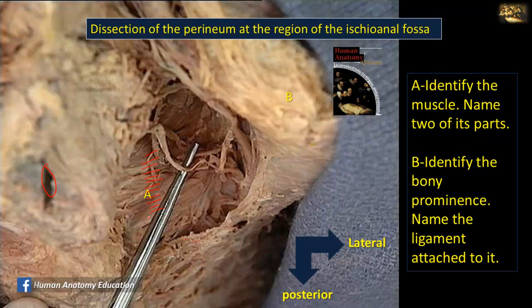You can also add levator prostatae and puborectalis muscle. The bony prominence B is located on the lateral side, and this is the ischial tuberosity. The strong ligament attached to it is the sacrotuberous ligament.